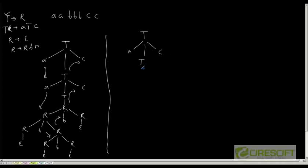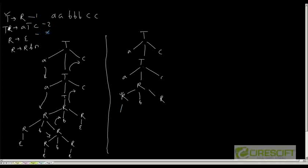Now let us see if I can create another syntax tree. Starting again with T, I substitute by aTC. Then I replace T by R. Now this R I replace with BR. Instead of expanding the leftmost R further with rule 4 (RBR), I can use rule 3 and replace it with epsilon.